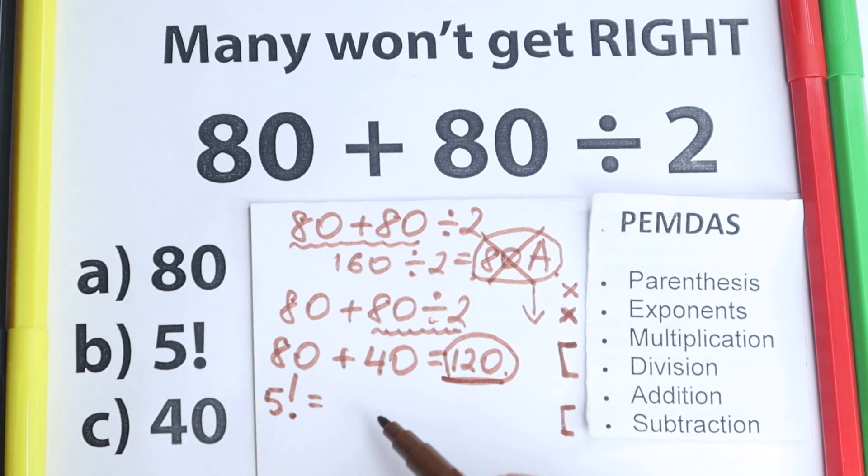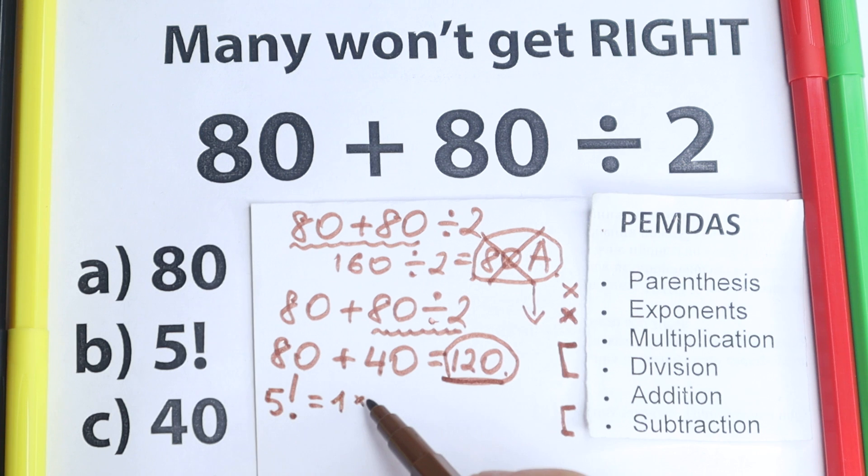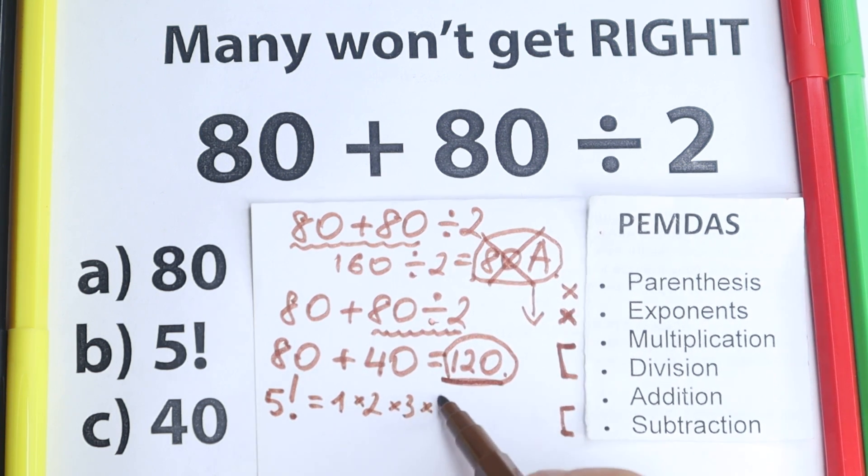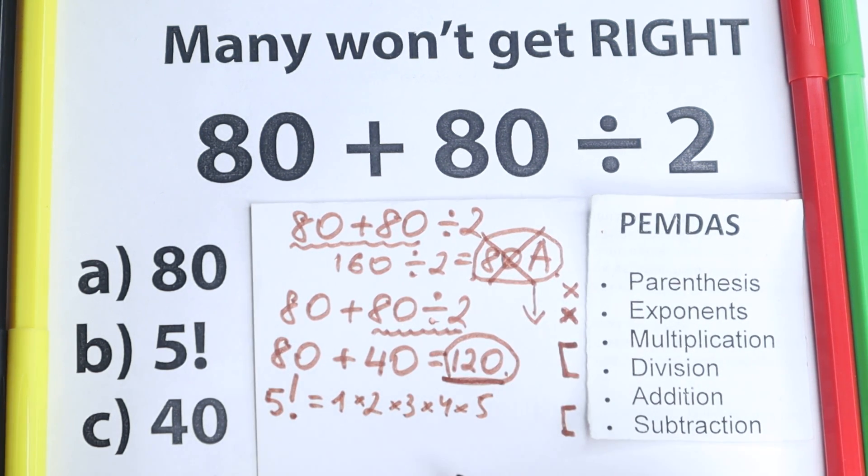Factorial, this is a product from 1 to 5, so we have 1 times 2 times 3 times 4 and times 5. From product from 1 to 5.